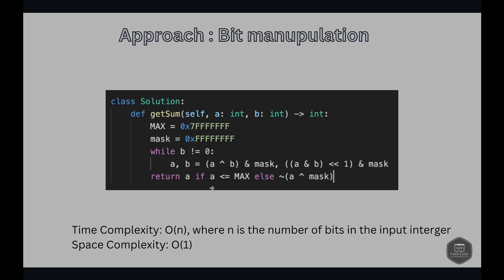The complement operation handles negative numbers. Max is represented within the 32-bit signed range, so we can return A directly if it fits. If A is greater than max, it means it is a negative number represented as a 32-bit signed integer.